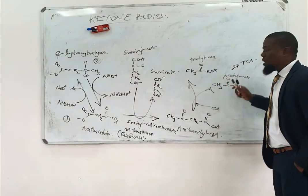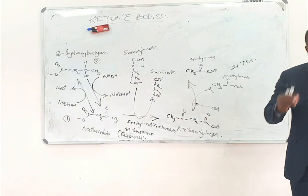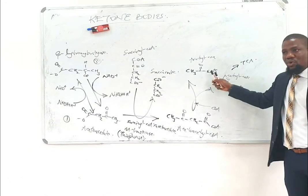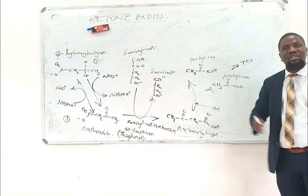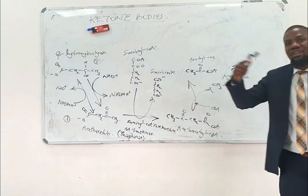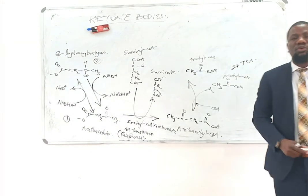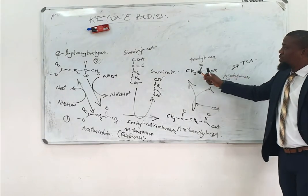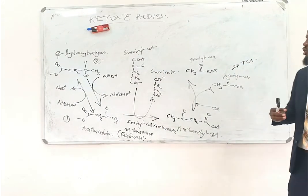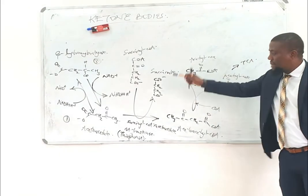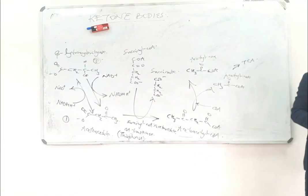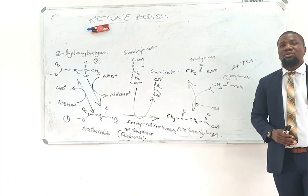When acetyl-CoA has been produced, particularly in the mitochondria, it won't be able to leave the mitochondria due to the presence of the CoA. So it has to be converted into ketone bodies and transported through the blood. As that process happens, the CoA is freed so that beta-oxidation can continue to produce energy for those tissues. Once these ketone bodies have been transported through the blood and get into peripheral tissue, they are broken down to acetyl-CoA and used as a source of energy.